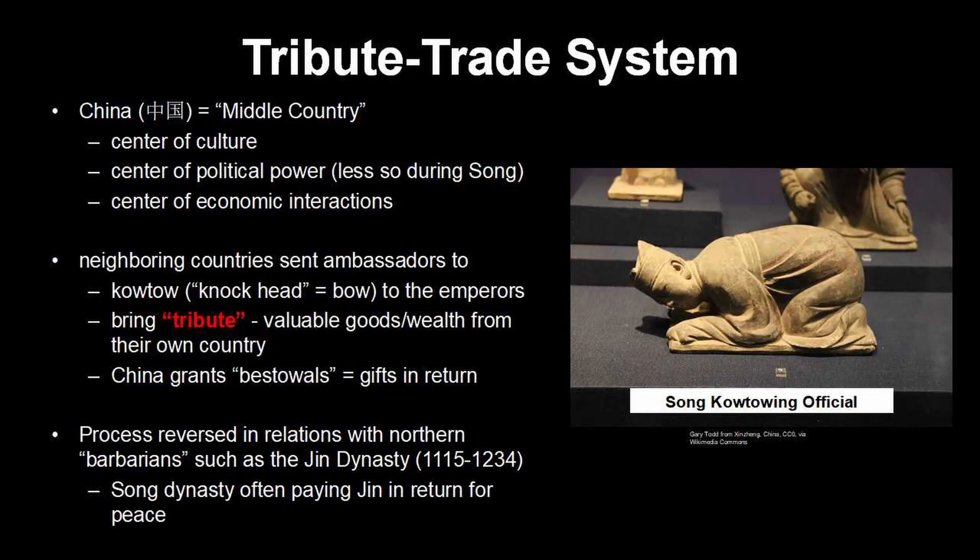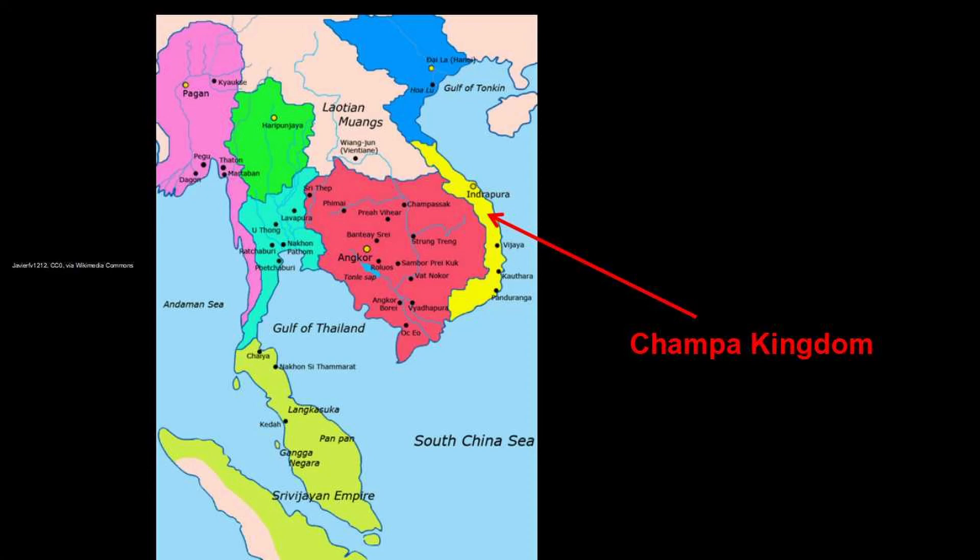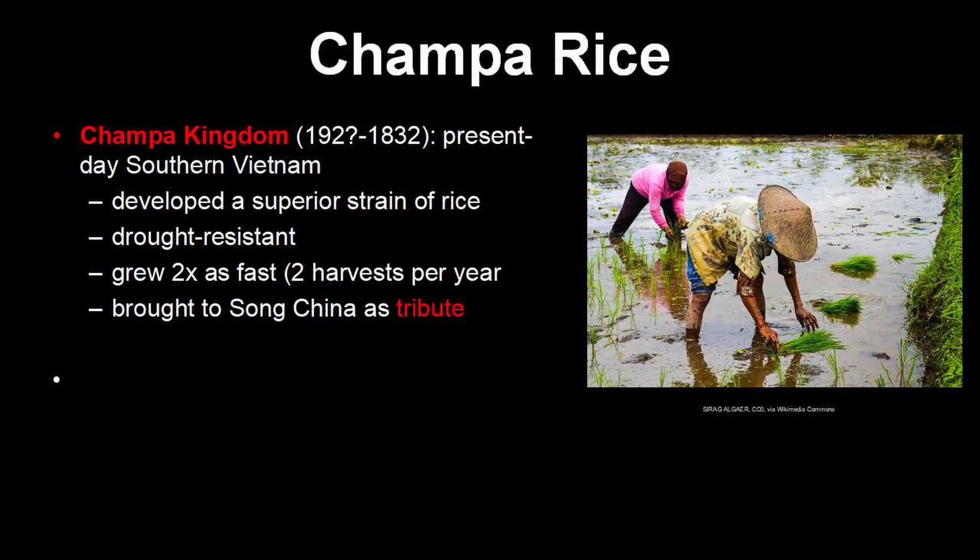Now for a big change and a great example of causation: Champa rice. Champa was a kingdom in what is now southern Vietnam, and they had this remarkable rice. It was drought resistant, so you could plant it in places where rice wouldn't normally grow. It grew twice as fast, allowing two harvests a year — and by the Ming Dynasty, some strains even gave three harvests a year. On one of these tribute missions, the Champa people brought their Champa rice to Song China, leading to much more rice and a growing population.